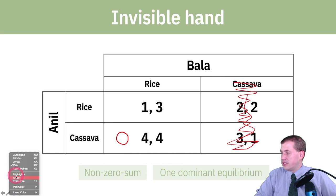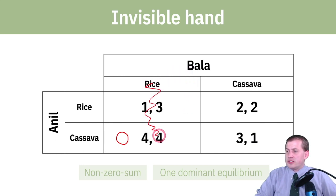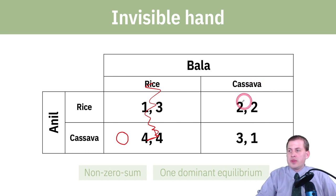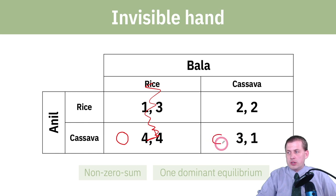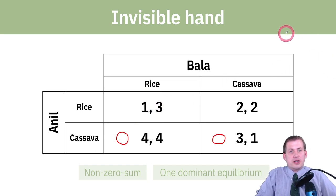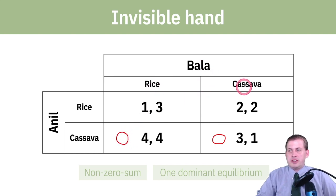Next, consider the other choice. If you know that Bala is going to grow cassava, what should you do as Anil? You look at the numbers — you could get two utils if you grew rice, or three if you grew cassava, which means you should grow cassava. So in this situation, we end up getting a dominant strategy: regardless of what Bala chooses — rice or cassava — the very best thing for Anil is to always grow cassava. That circle means: if Bala chooses rice, do cassava; if Bala chooses cassava, also do cassava.